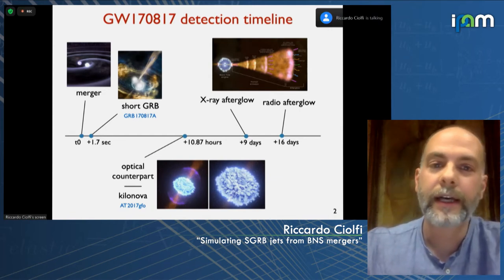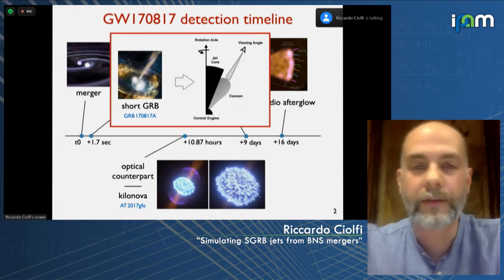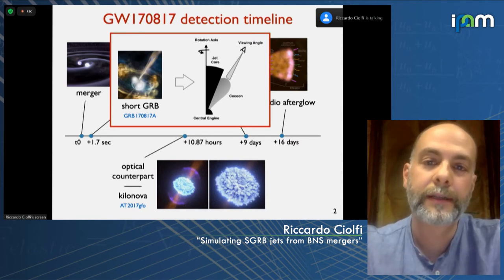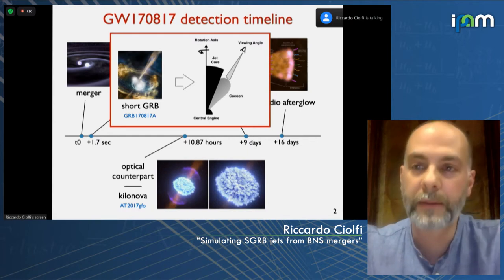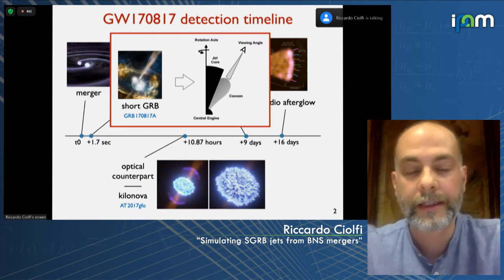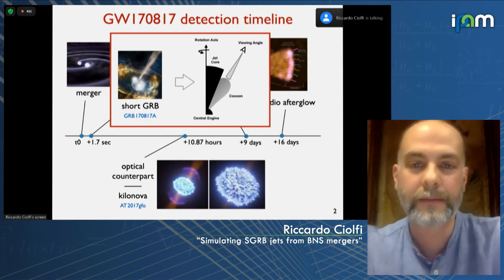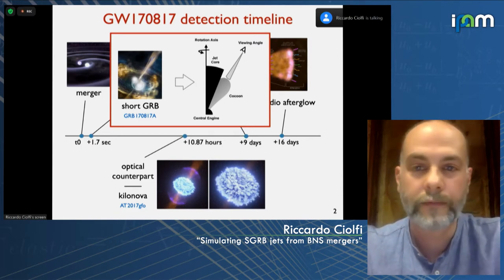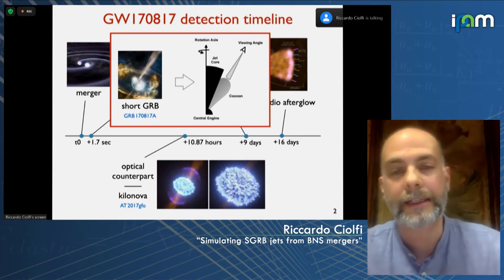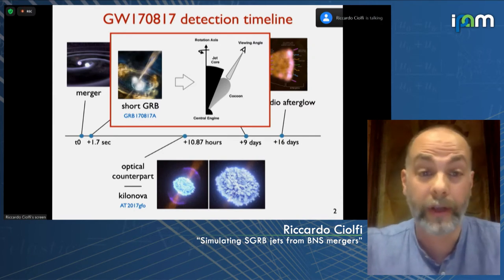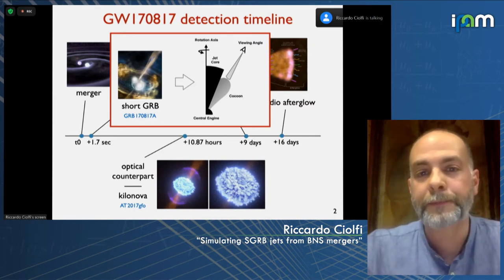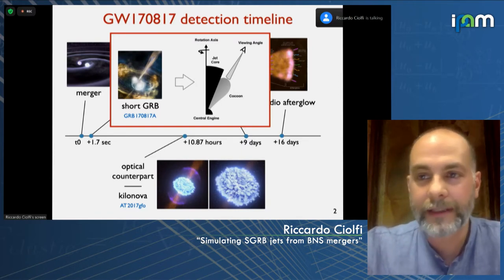We are particularly interested in the gamma rays and afterglow signals that combined together eventually led to confirmation that this was a signature of a short gamma-ray burst — a jet energetically similar to other known short gamma-ray bursts, but this time observed off-axis by about 15 to 20 degrees. This is of course a confirmation that binary star mergers can indeed power relativistic jets and make short gamma-ray bursts — very important, though the conclusion was not immediately obvious.